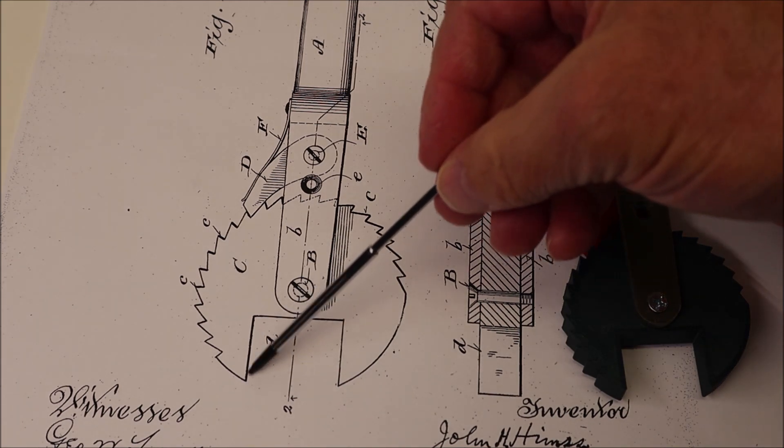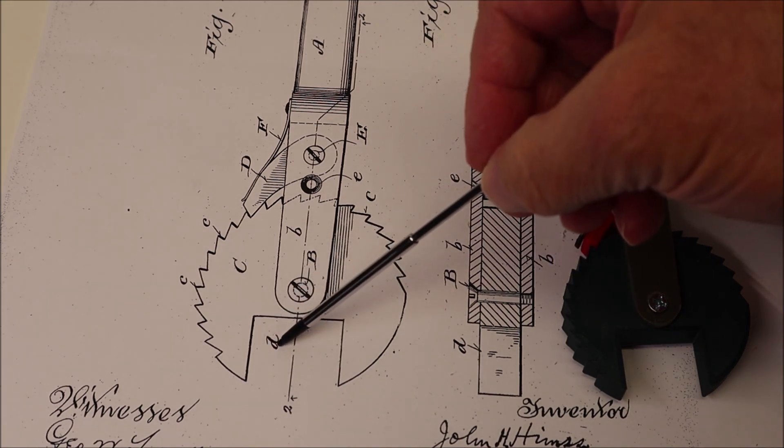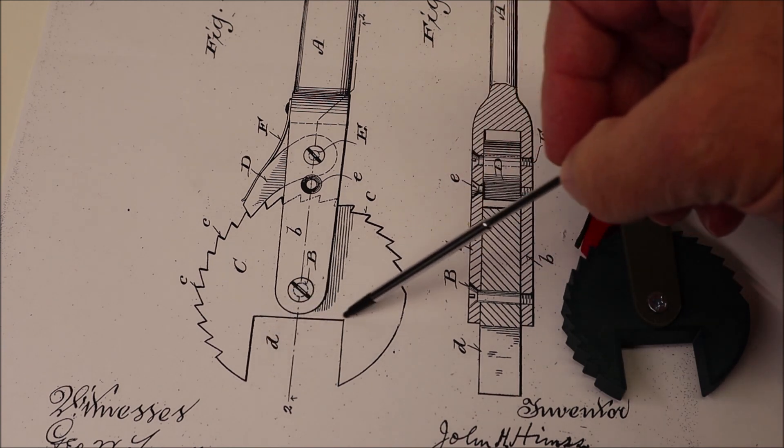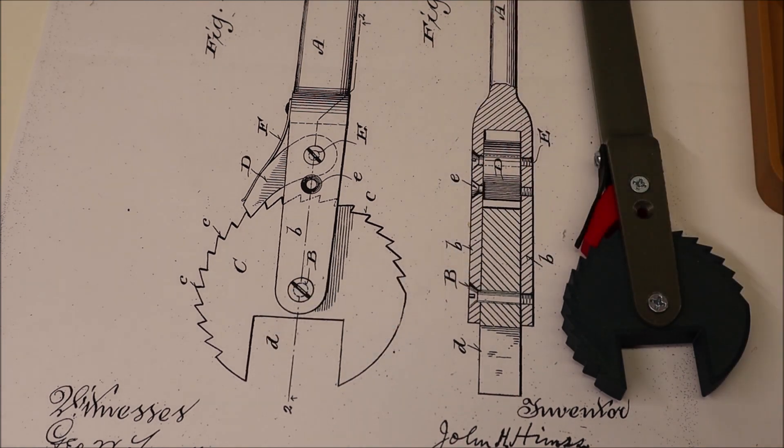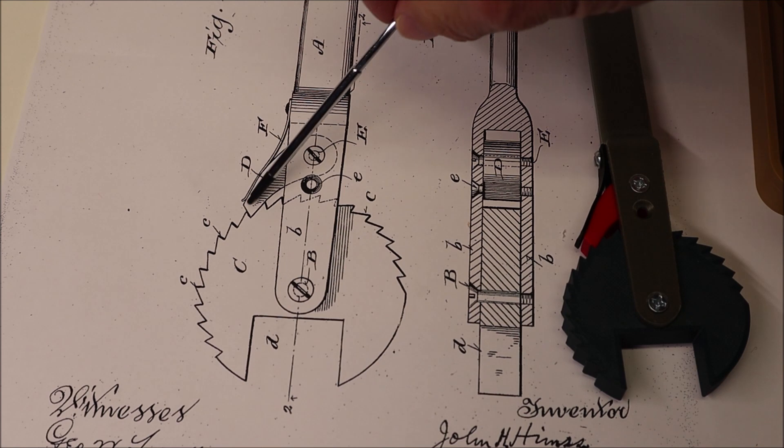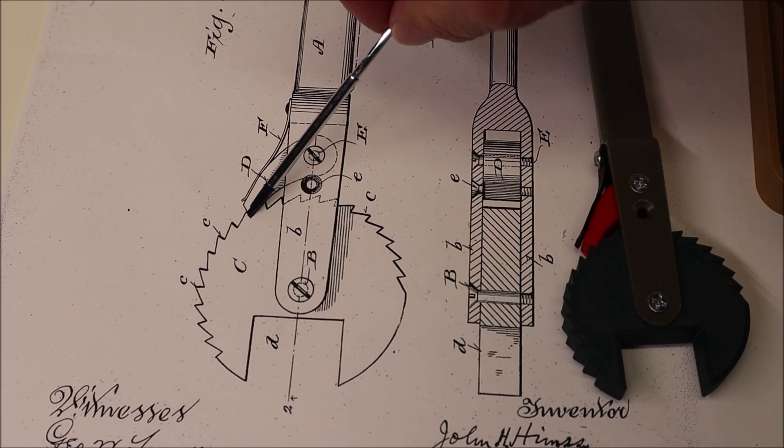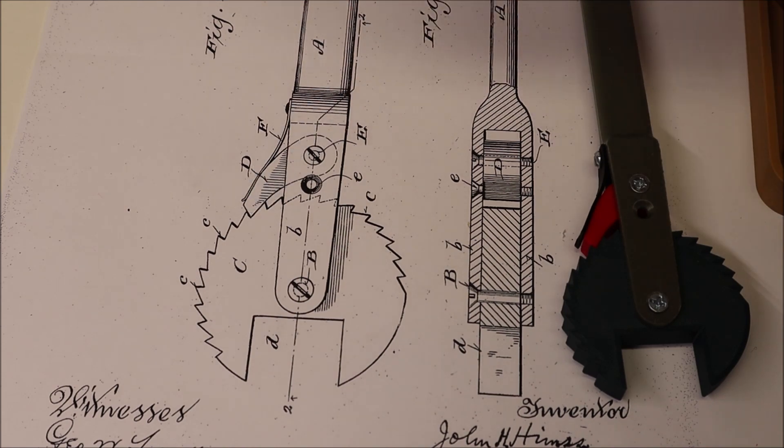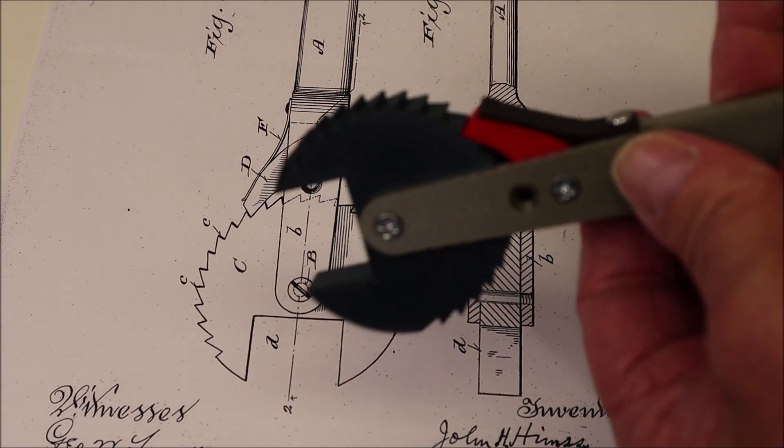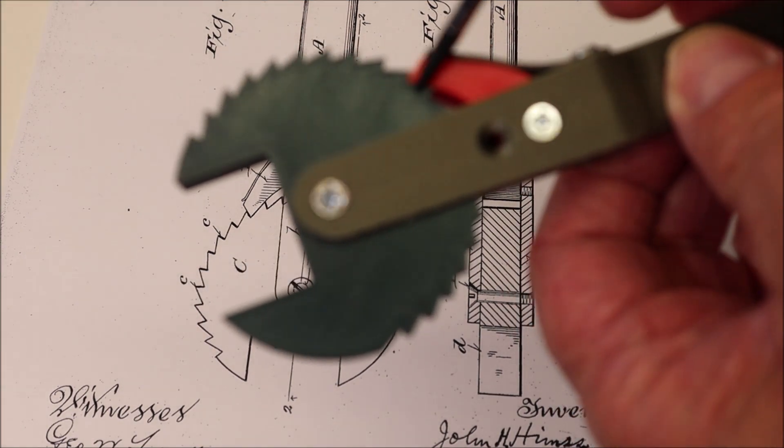And then there is this recess D for a bolt head or nut. And here there's this pawl D which pivots on this point E and engages the ratchet teeth on the disc. And you can see that right here.